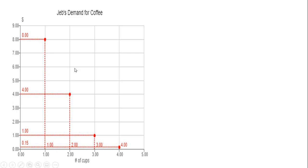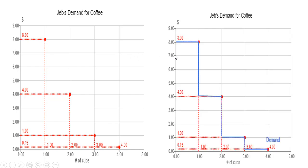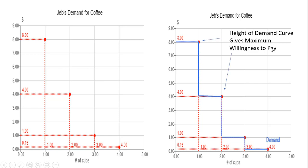Just rewriting that last figure — to calculate the demand curve, given that we're assuming only discrete units can be purchased, the demand curve will look like a staircase. This blue line here is indicating the demand for Jeb. I want to reiterate that the height of the demand curve at any point gives Jeb's maximum willingness to pay.